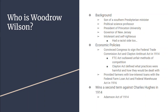He also passes the Workman's Compensation Act, which gave accident and injury coverage to federal workers. There's the Federal Farm Loan Act that gave low-interest loans to workers, and then the Federal Warehouse Act that gave workers a place to sell and store their crops.